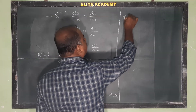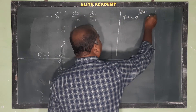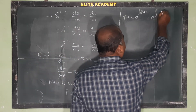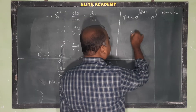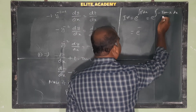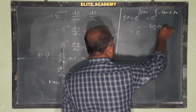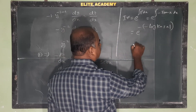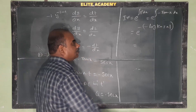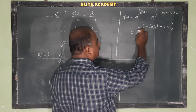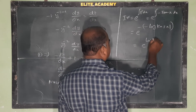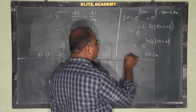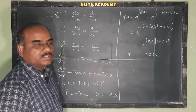Integrating factor (IF) = e^(∫P dx) = e^(∫-tan(x) dx) = e^(-log|cos x|) = e^(log|sec x|). Wait, that gives e^(log|cos x|) = cos(x). So the integrating factor is cos(x).